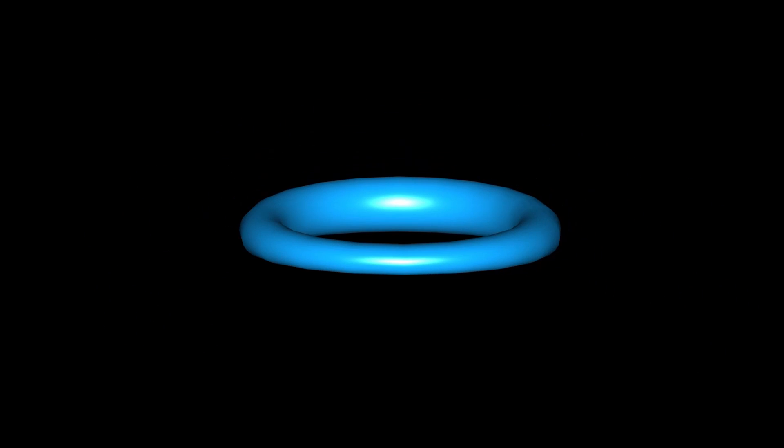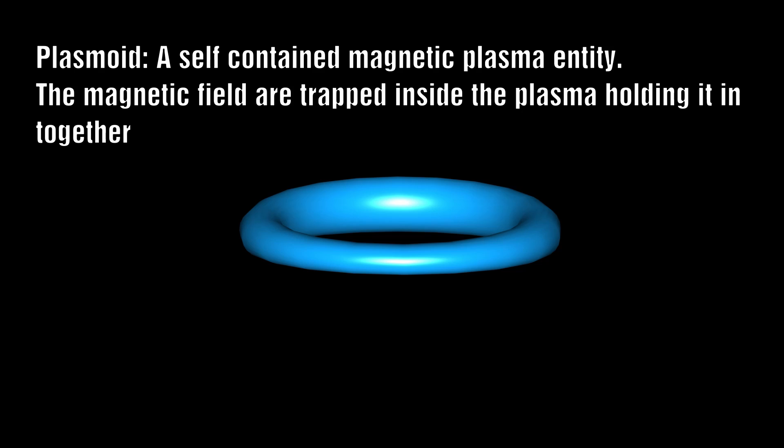Their defining feature is that the magnetic field they produce is trapped inside the structure, wrapping around the outer circumference. This causes current to flow inside and enables the plasmoid to maintain its shape for a prolonged period of time.